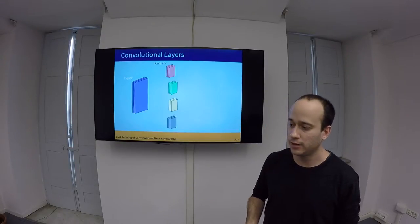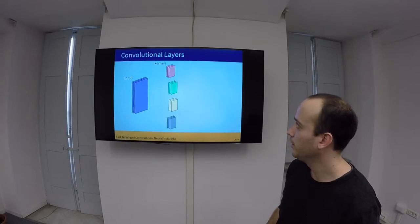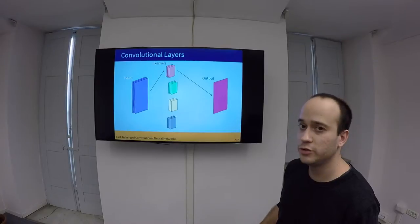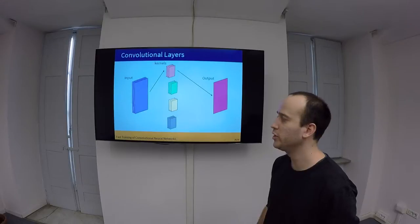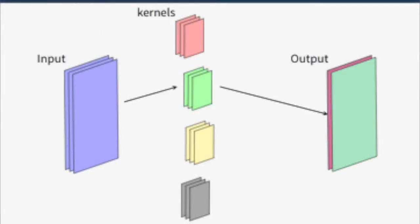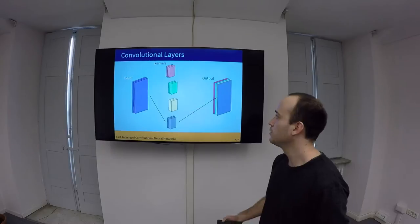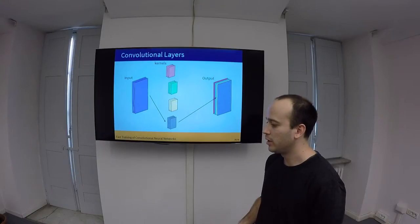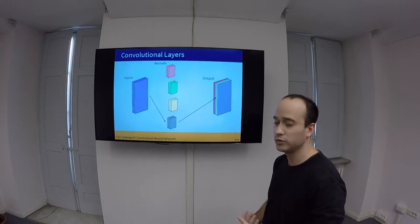And the layers contain kernels, convolutional kernels. And for each kernel, we will produce one feature map. So, for example, here we have an input which has three channels. And we convolve this input with the first kernel and produce the first output, convolve it with the second one, produce the second output, the third one, and so on. Basically, the number of output channels is the number of kernels we have in the layer.